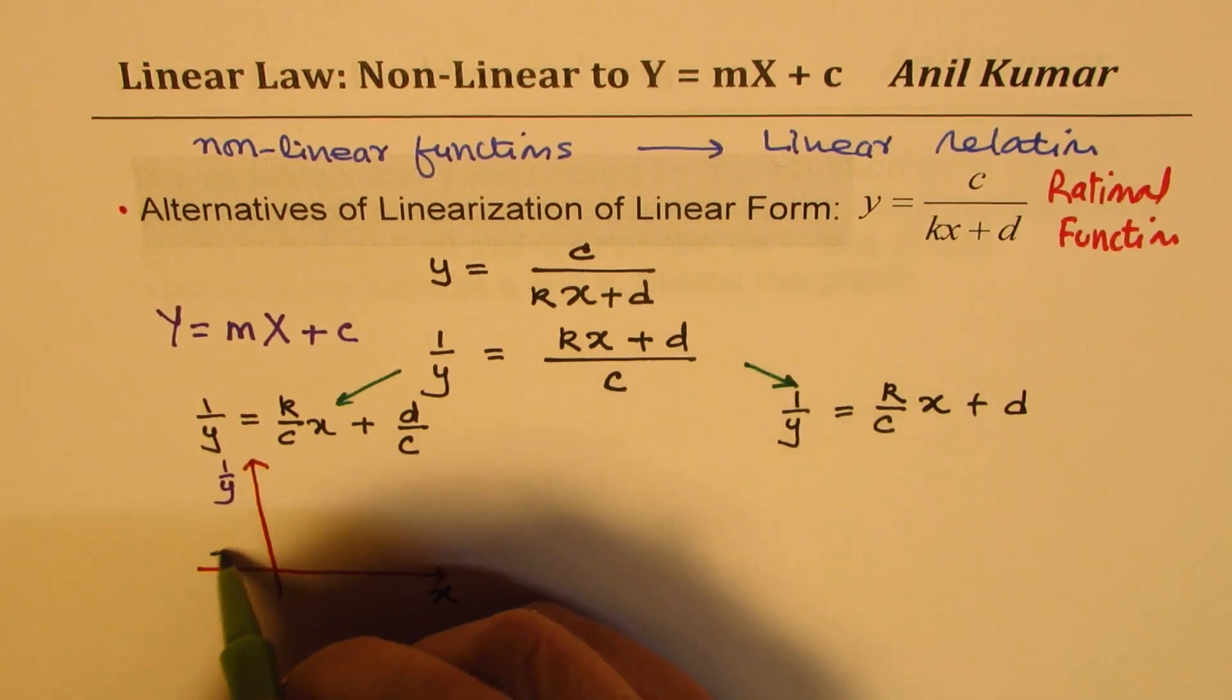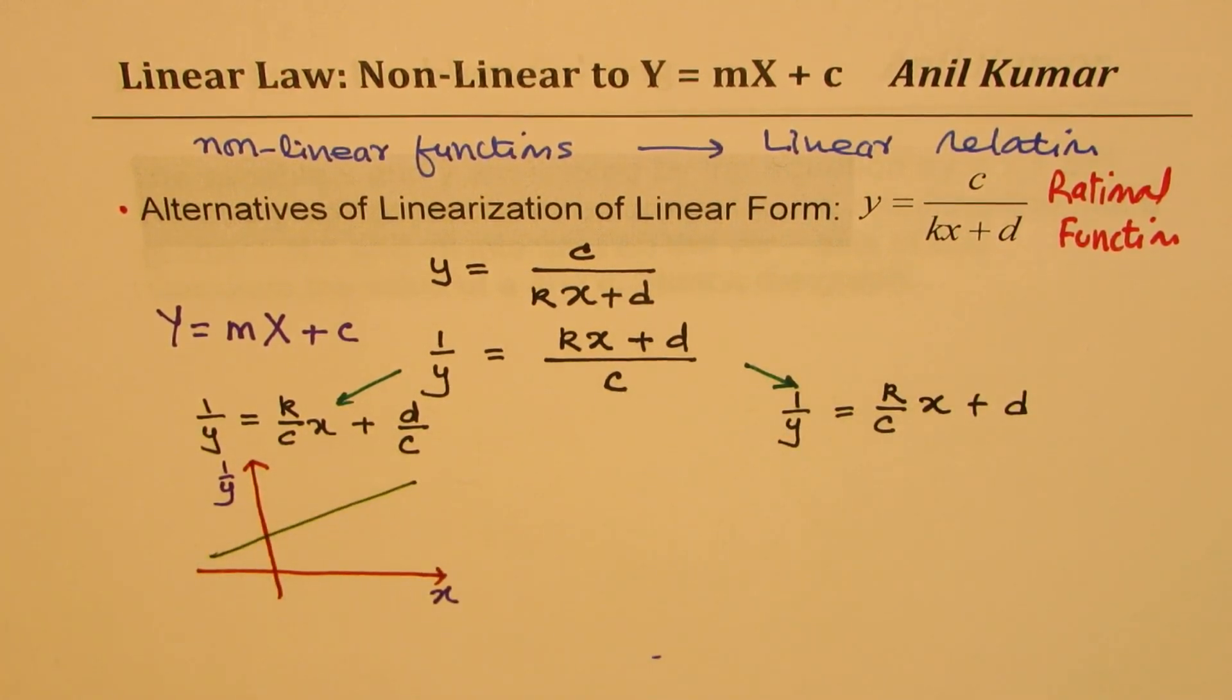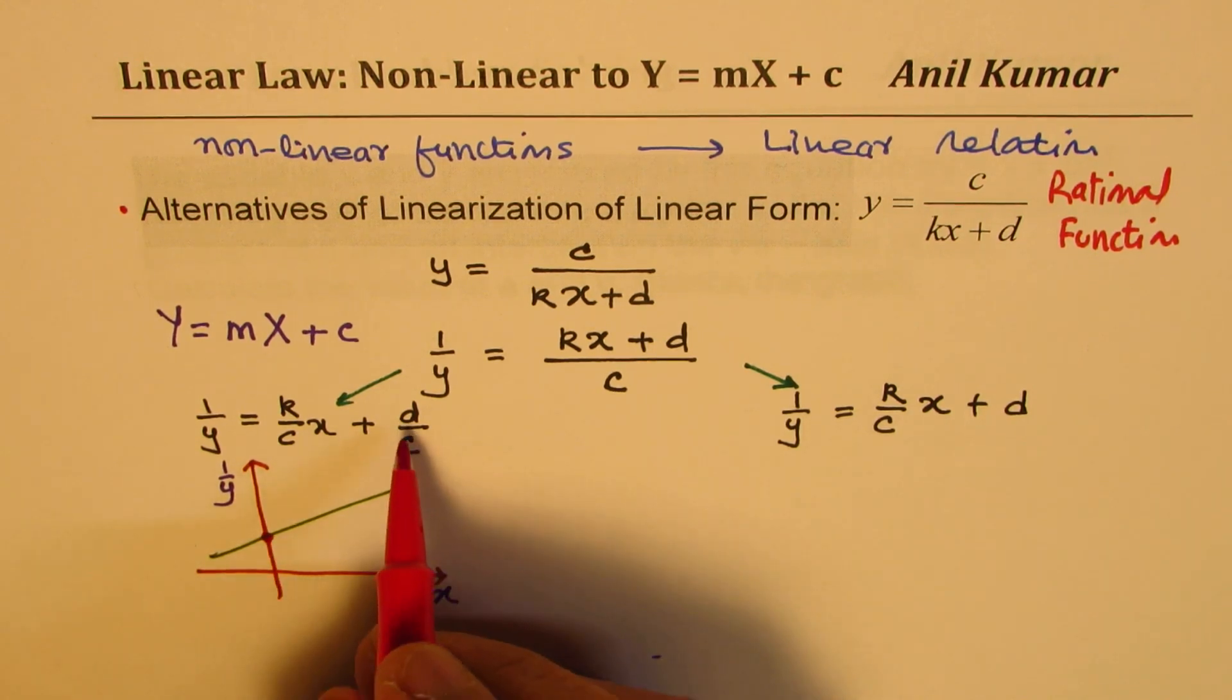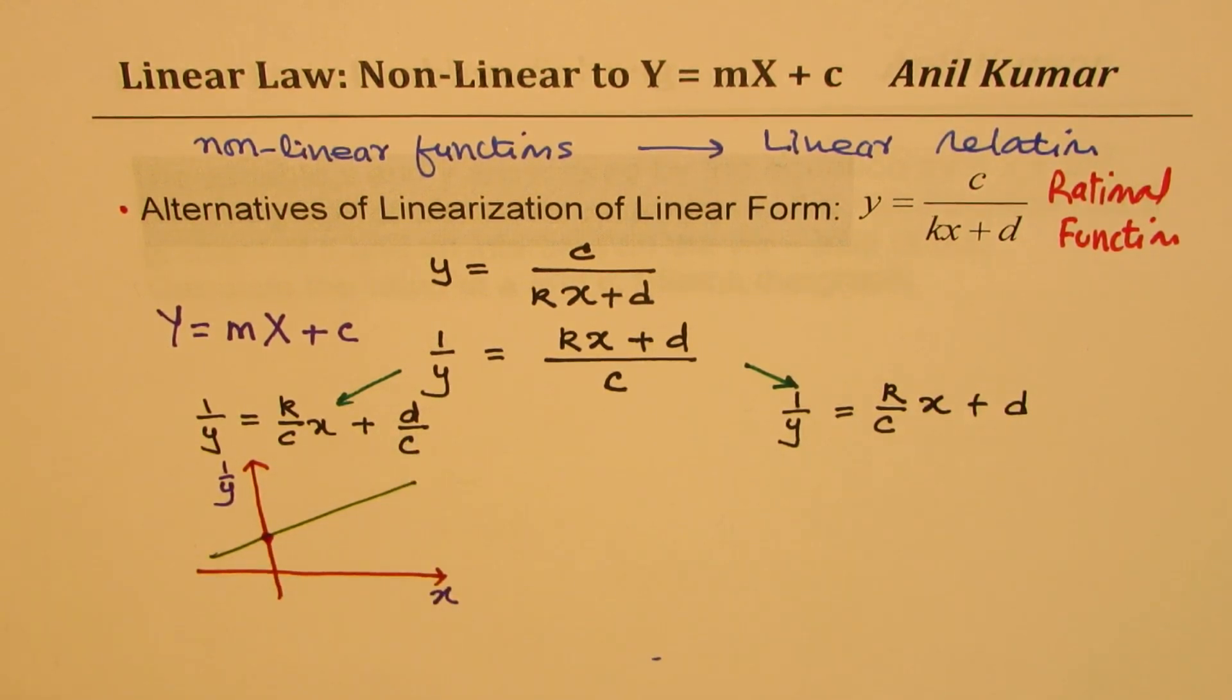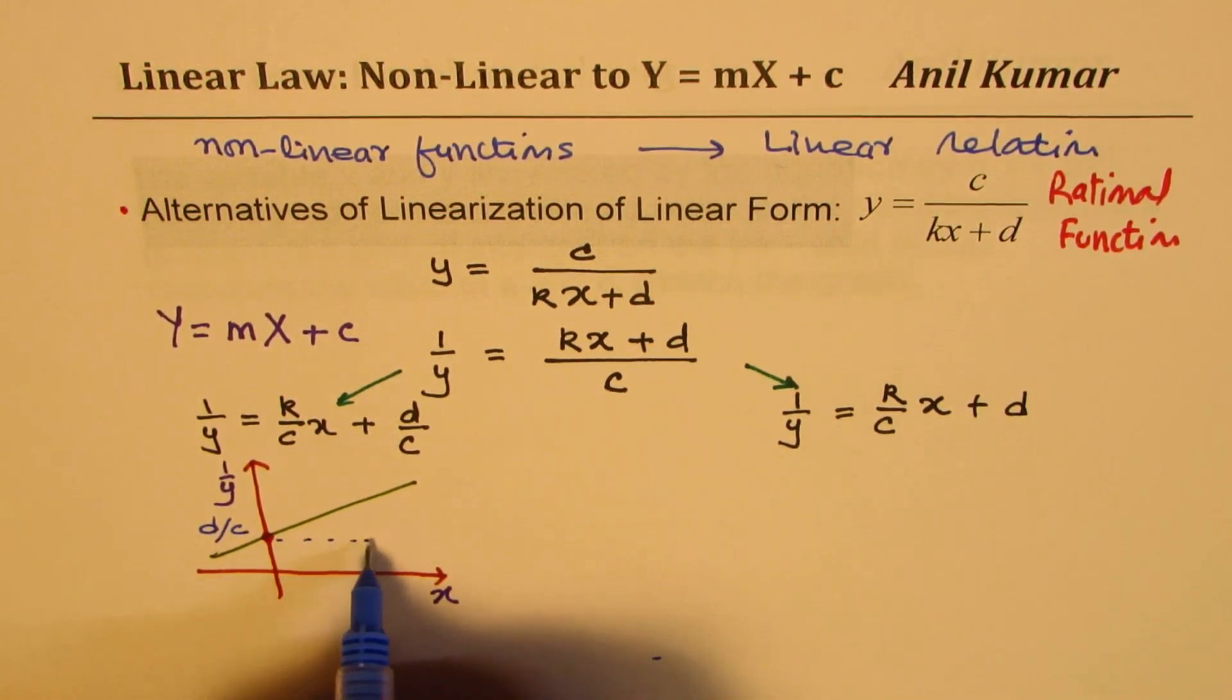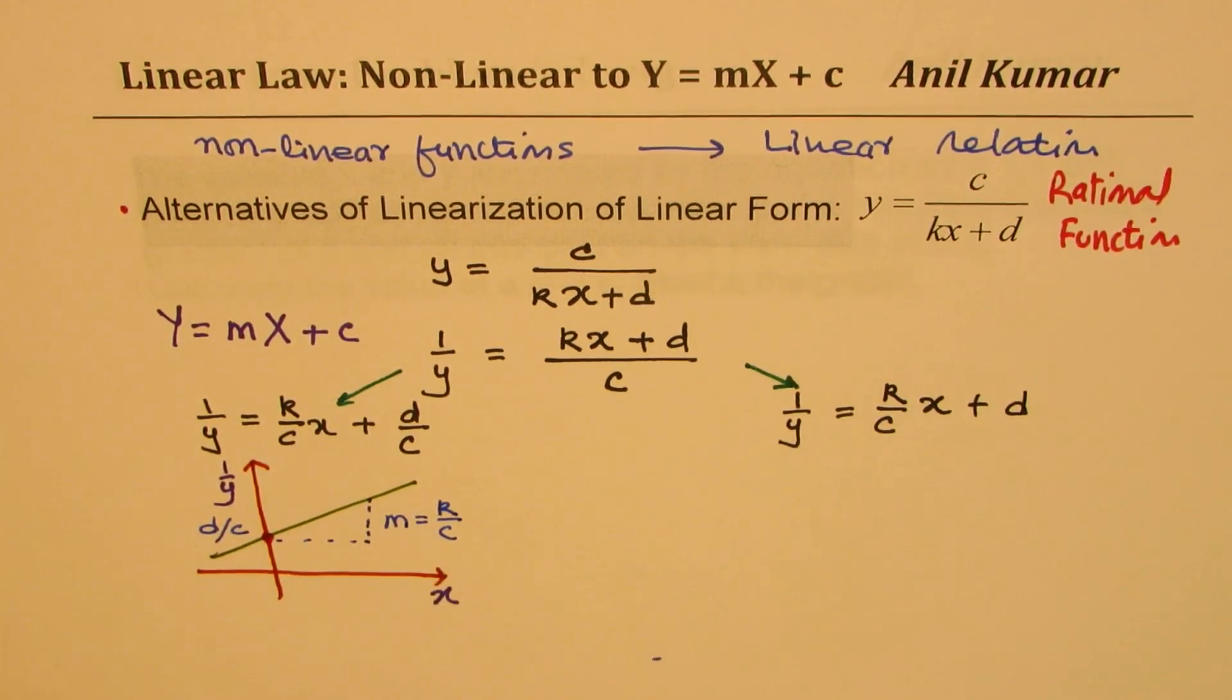Just let me sketch one, for example. Now, for this straight line, the intercept here is going to be d over c. This point here will be d over c, and the slope m will be k over c. That is what it represents.